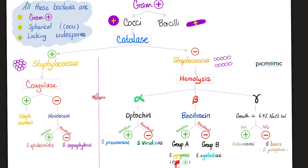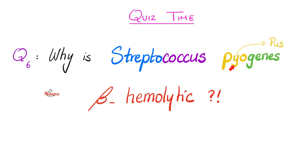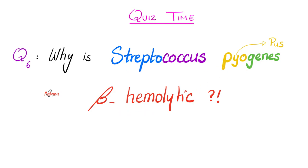Streptococcus pyogenes is also known as Group A Beta-Hemolytic Strep. Beta-hemolytic because it causes complete hemolysis on blood agar. Streptococcus because it's arranged in chains. It is catalase negative but gram positive. Why is Strep pyogenes beta-hemolytic? Because it has hemolysin — a protein or enzyme that breaks down blood.